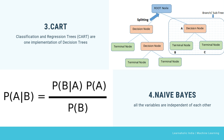The next machine learning algorithm is Classification and Regression Trees, or CART. This is one implementation of a decision tree. The non-terminal nodes — the root node and internal nodes — represent a single input variable x and a splitting point on that variable. The terminal nodes are leaf nodes, which represent the output variable y. The model uses this structure to make predictions.